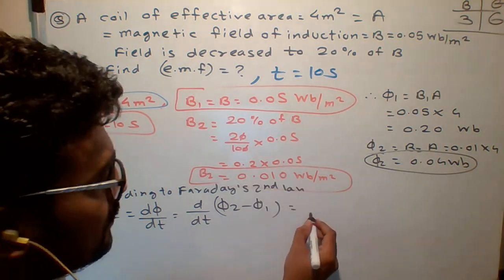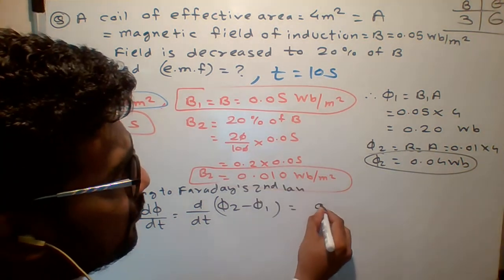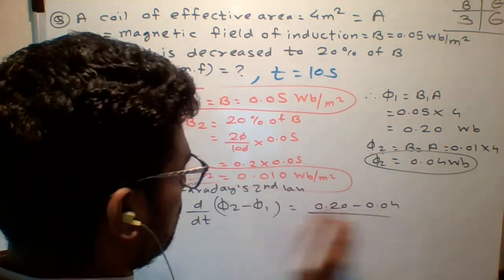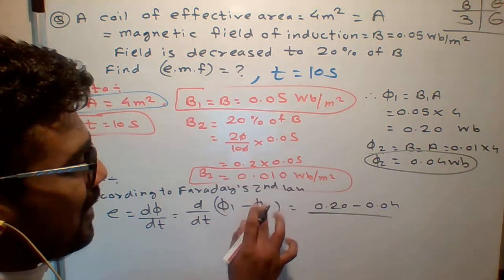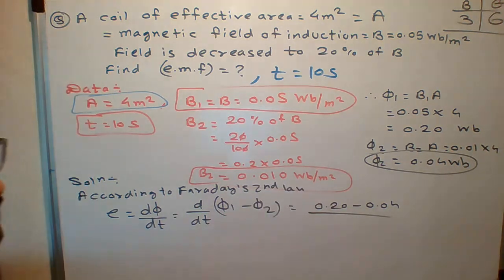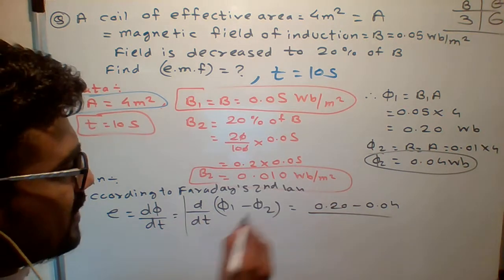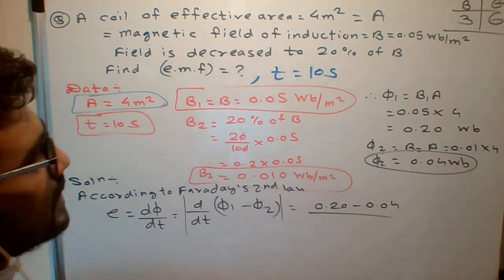φ2 minus φ1, which is 0.20 minus 0.04. Or φ1 minus φ2 I can write, but I want difference, either φ1 minus φ2 or φ2 minus φ1 upon time, because magnitude-wise I need it. And what is time? Time is given how much? 10 seconds.